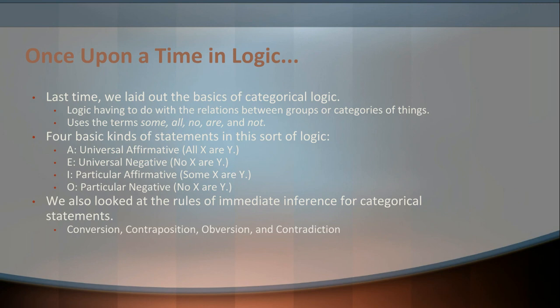So, four basic statements: A, E, I, and O, which is how we'll refer to them throughout this lecture and the textbook. In addition to getting this vocabulary down, we looked at some of the basic relationships between these different terms — things like conversion, obversion, contrapositive, and so on. These are what we call the rules of immediate inference for categorical statements. We're not going to spend a ton of time on them right now, but we will refer to them a couple of times throughout this lecture, so feel free to go back to your notes or the previous lecture if you need a refresher.